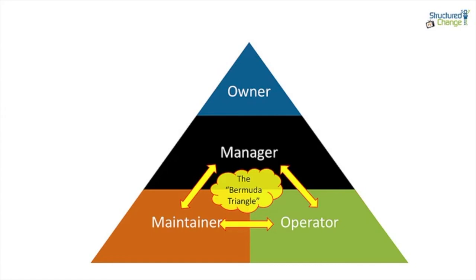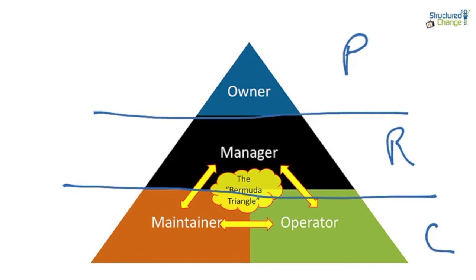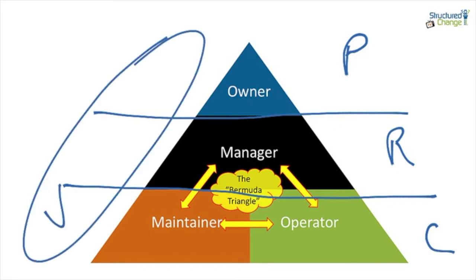When we come back to the asset divided into the four stakeholder groups, you can see that the owner is a clear delineation — they are the entity that owns the asset in question. We've then got the manager in between, and then the tension that exists between maintainer and operator. So again: a performance focus for the owner, a risk focus for the manager, and a cost focus for the maintainer and operator. But ultimately, all three lead to value.